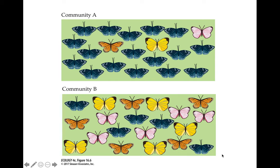If you compare these two communities, you can see that community A has one species — the blue butterfly — that makes up 85% of the individuals in this whole community, and the other species only make up 5%. In community B, even though they both have the same number of species, the abundance is equal and each species constitutes 25%. So community B has a higher diversity than community A — there are more representatives of more individuals.